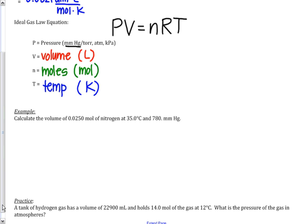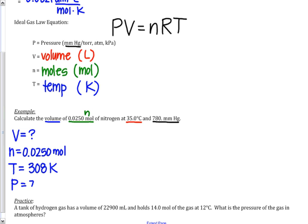I'm asking you in this example problem to calculate volume. I'm giving you 0.025 moles, so I'm giving you N. I'm giving you a temperature, and I'm also giving you a pressure. I think it's helpful to do what we teach you in algebra: list your variables. Volume is what I don't know. N is 0.0250 moles. T, temperature, 35 degrees Celsius cannot be used. You have to change that to Kelvin. So 35 plus 273 makes 308 Kelvin. And then the last variable given in our problem is the pressure at 780 millimeters of mercury.